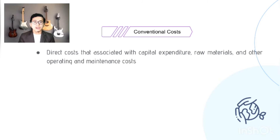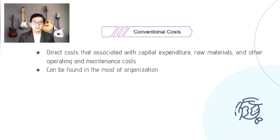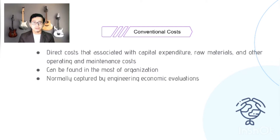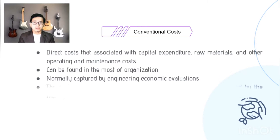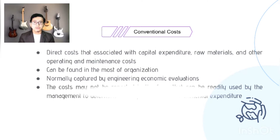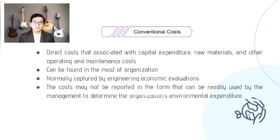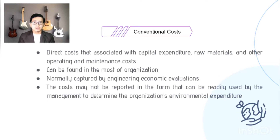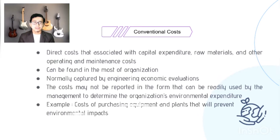Conventional costs can be found in most organizations and are normally captured by engineering and economic evaluation. However, they may not be reported in a form readily usable by management to determine the organization's environmental expenditure. An example is the cost of purchasing equipment and plants that will prevent environmental impact.